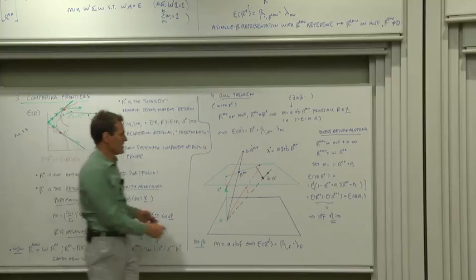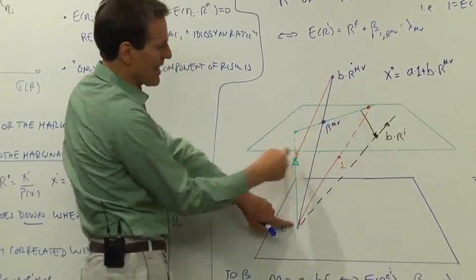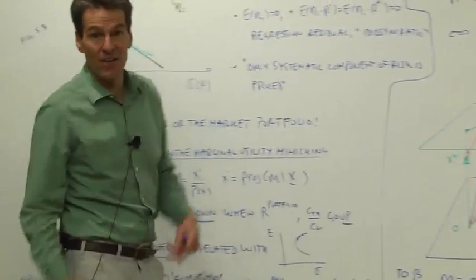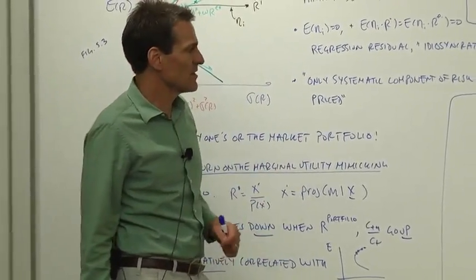We've just proved graphically that if a return is on the mean variance frontier, then by stretching it and adding a constant, I can get to a discount factor. I can price assets. I've got that information with a mean variance efficient return.